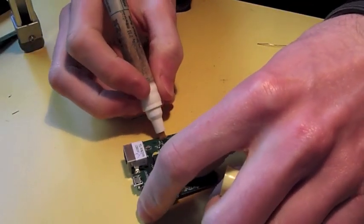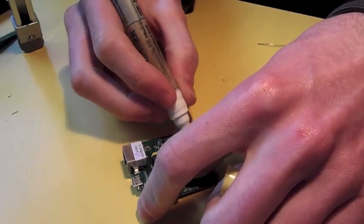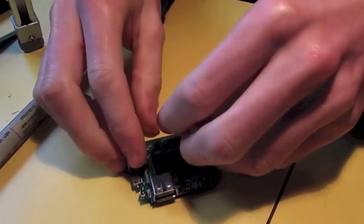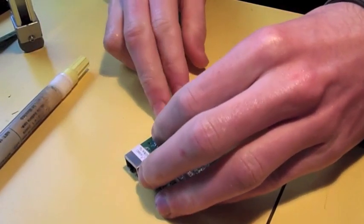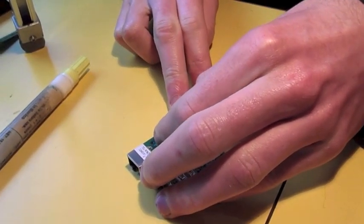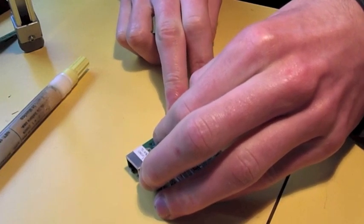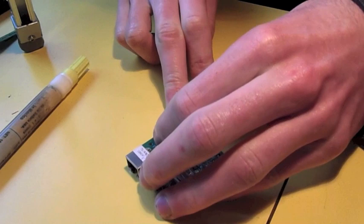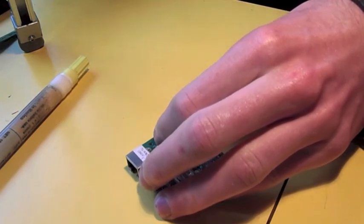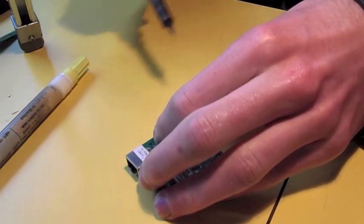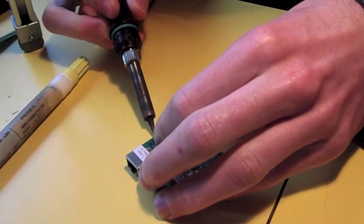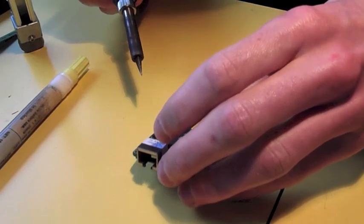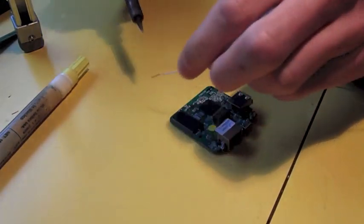Add more flux. So one thing with SMD soldering is you can never have too much flux. Line the chip up. Check the corner pins. I'm pretty happy with that alignment, so I'm gonna tack the other corner.